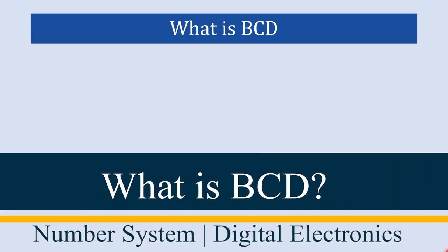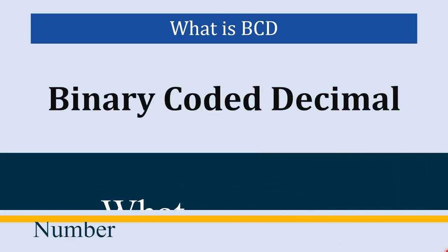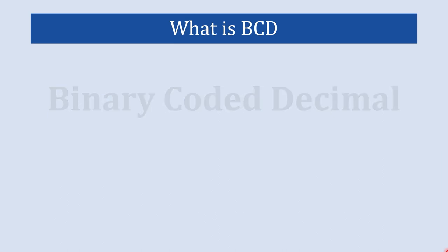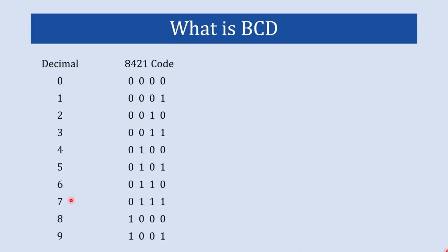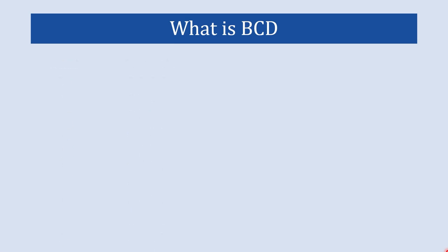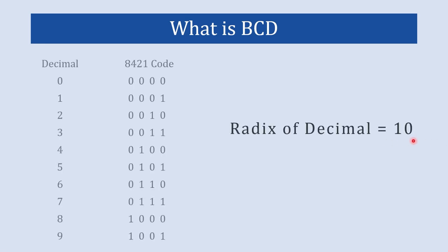What is BCD? BCD means binary coded decimal. It is simply a representation of a single decimal digit in binary form. We have been using the decimal number system since our childhood and we know that the radix of the decimal number system is 10. This radix 10 means we have 0 to 9 distinct digits to represent any number. BCD code is a binary number coded in the form of decimal numbers, and in BCD code any decimal number is always represented using a four-digit manner.